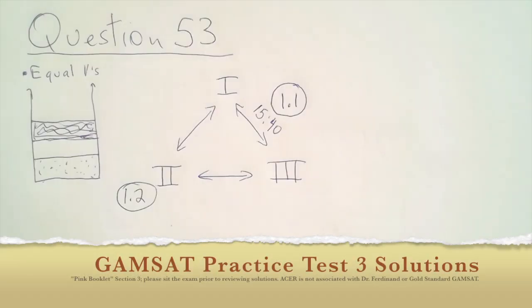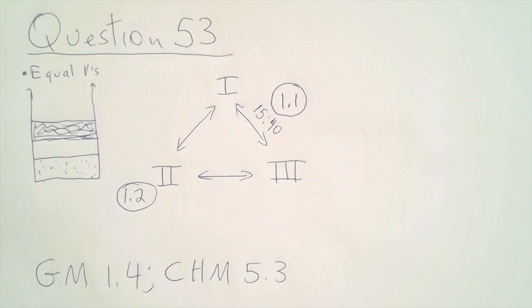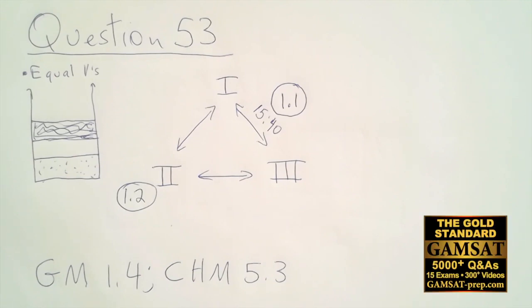Question 53: We have three mutually immiscible solvents. Immiscible means they don't mix, like water and oil—they separate into layers. I tried to draw a beaker here with three mutually immiscible solvents.